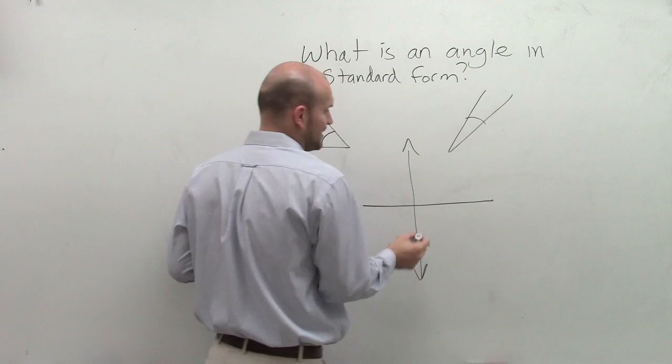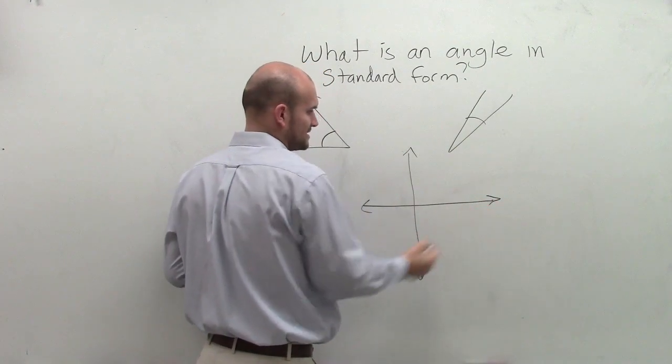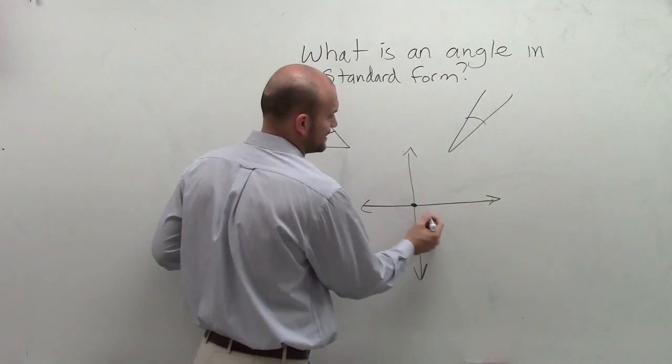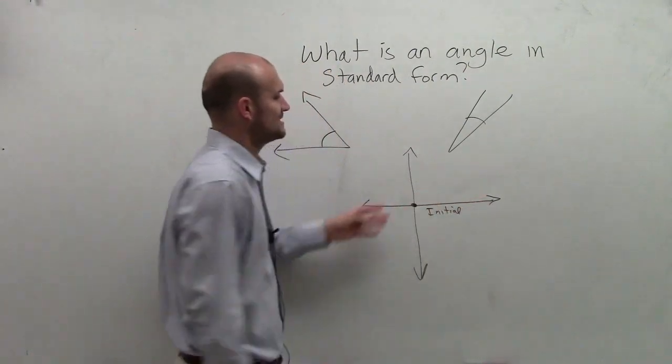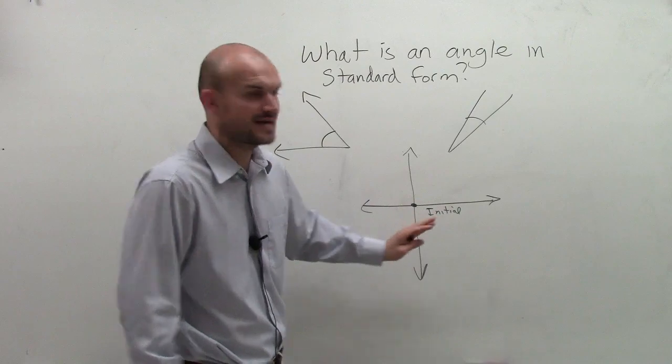And the standard form of an angle is when, if we look at our Cartesian coordinate system, our standard form is they're going to have an initial side on our x-axis. And it's going to be the x-axis between quadrants 1 and 4. So this is going to always be our initial side.